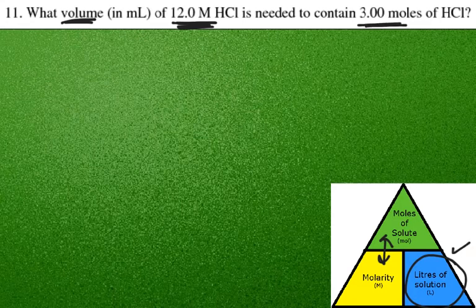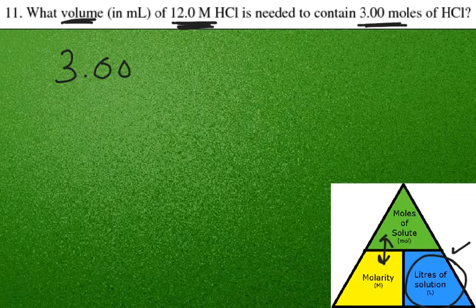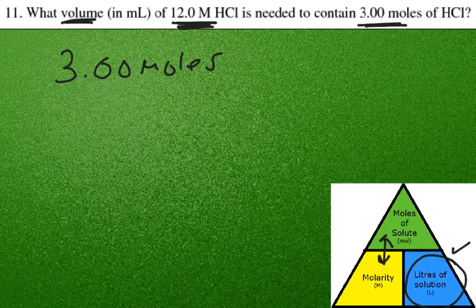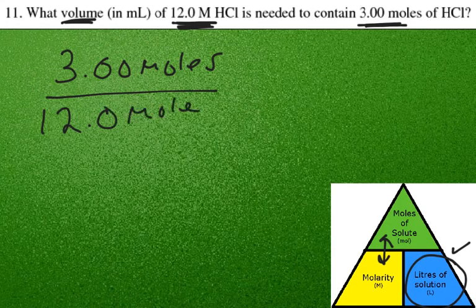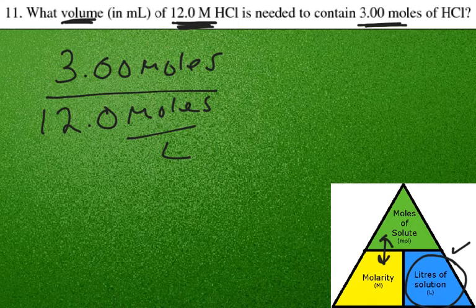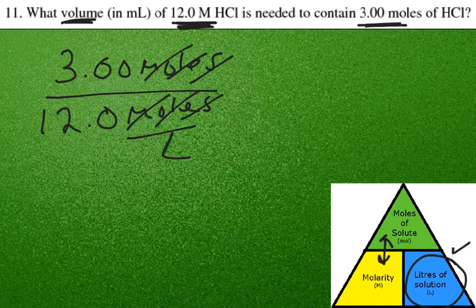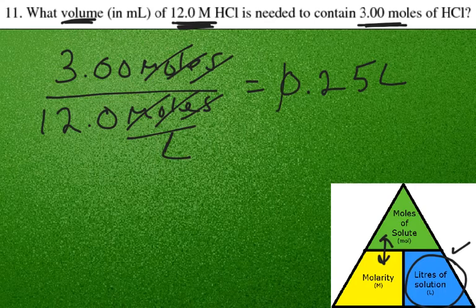So we're going to put our 3.00 moles in the top. We will divide that by 12.0 moles per liter. So what's going to happen is the moles and the moles cancel. The liters, it flips up to give us liters of volume. That makes sense. And we have 3 divided by 12 is the same thing as 1 over 4 or 0.25 liters. And that's it. You've just solved it.